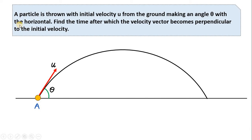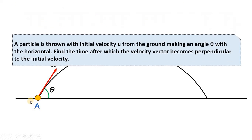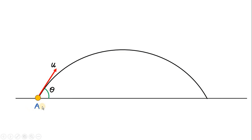So here is the question. A particle is thrown with initial velocity u from the ground making an angle theta with the horizontal. Find the time after which the velocity vector becomes perpendicular to the initial velocity. As you can see, from point A on the ground a particle is given a velocity u making an angle theta with the horizontal, and after some time this particle travels along a parabolic path where at some instant its velocity will be directed along that direction.